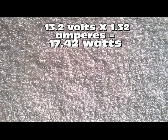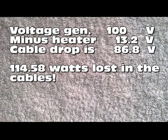Since the generator is applying 100 volts, the rest of the voltage will appear across the resistance of the cable. That is, 100 volts produced by the generator minus 13.2 volts appearing across the heater gives an 86.8-volt drop across the wires — 43.4 volts across each cable — causing the cables to heat the air without any benefit whatsoever, using up 114.58 watts.